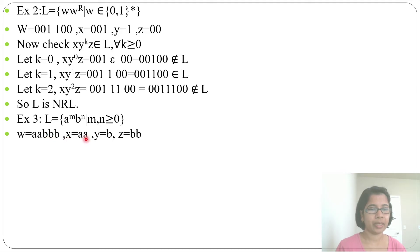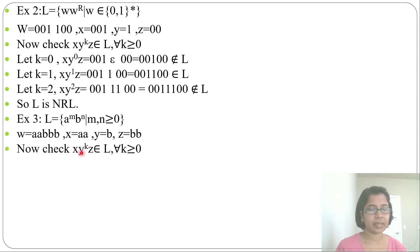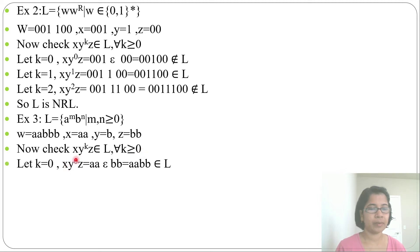Let x = aa, y = b, z = bb. The length of y is 1, not 0, which is fine. x and z can be considered; |xy| = 3, which is less than 5. For k = 0: x·y^0·z = aa·ε·bb = aabb, which belongs to L because it is any number of a's followed by any number of b's.